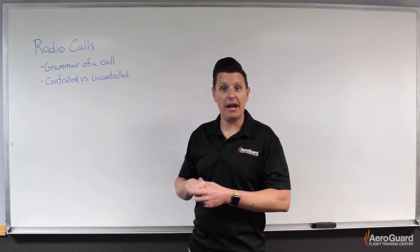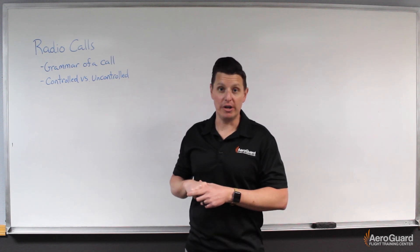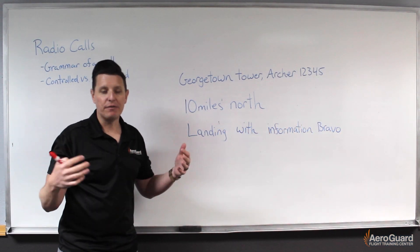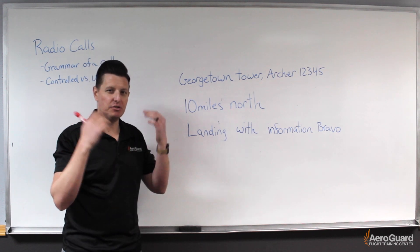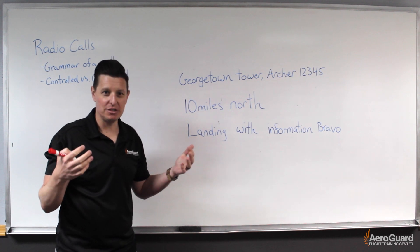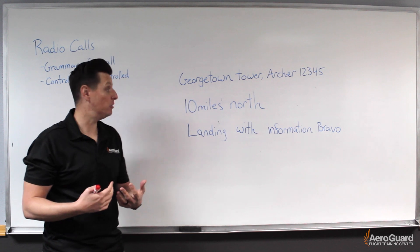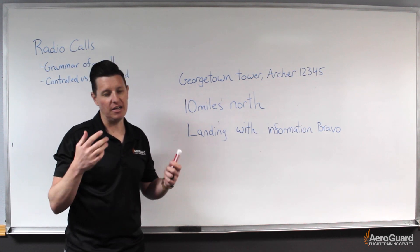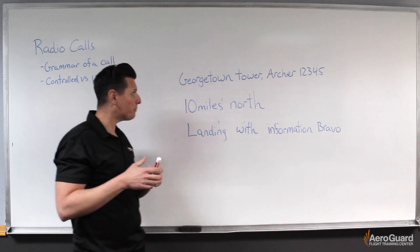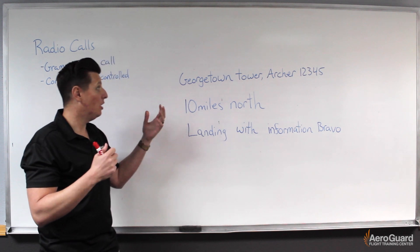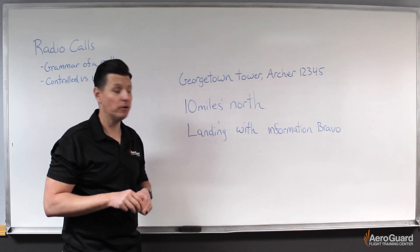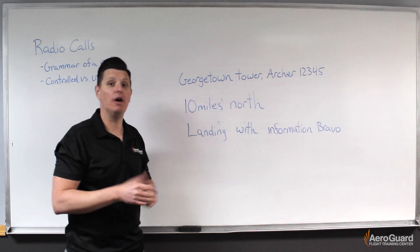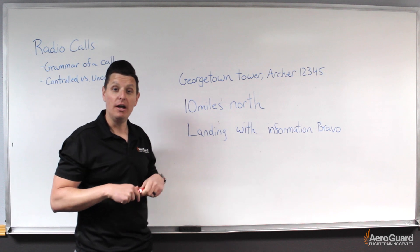So let's jump into the grammar of a radio call. When we think of a radio call, there are many different parts. One of the biggest things that stands out is when we listen to what's happening on the radio, we can hear words, but it's not structured the same way we speak English. This is why I refer to this as the grammar of a radio call — we use a shorthand version of the language. I've taken an example radio call for coming inbound to land at an airport and divided it into three sections.